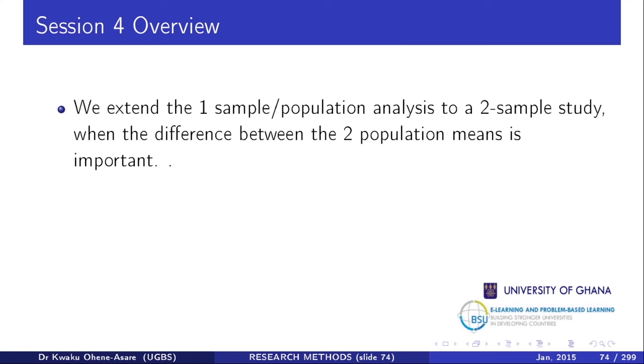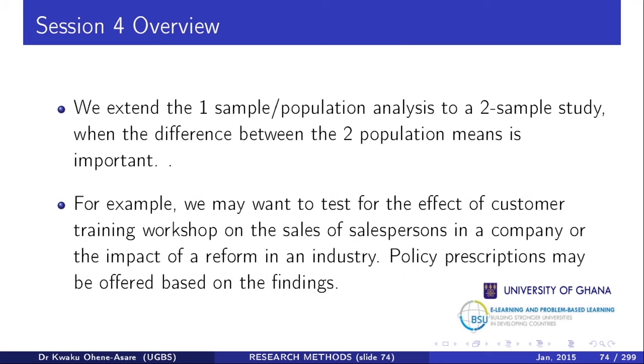We are going to extend the one-sample study to a two-sample study where the difference between the two population means is important. For example, we may want to test for the effect of a customer training workshop on the sales of salespersons, or the impact of structural reforms on an industry — before and after. If performance was 80% before a reform and 89% after, you might want to attribute that rise to the reform, and from that make policy prescriptions.